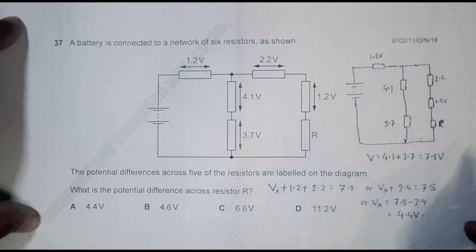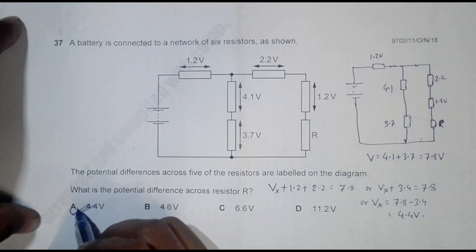So the PD across this resistor should be equal to 4.4 volt, and if you go through the answer choices, choice number A should be the correct answer.